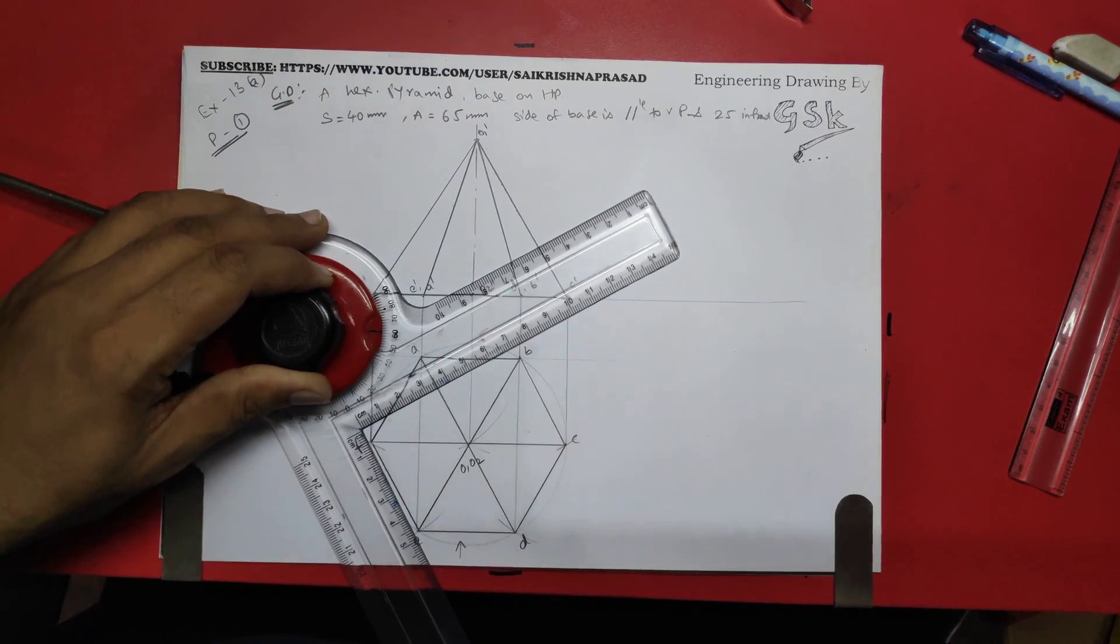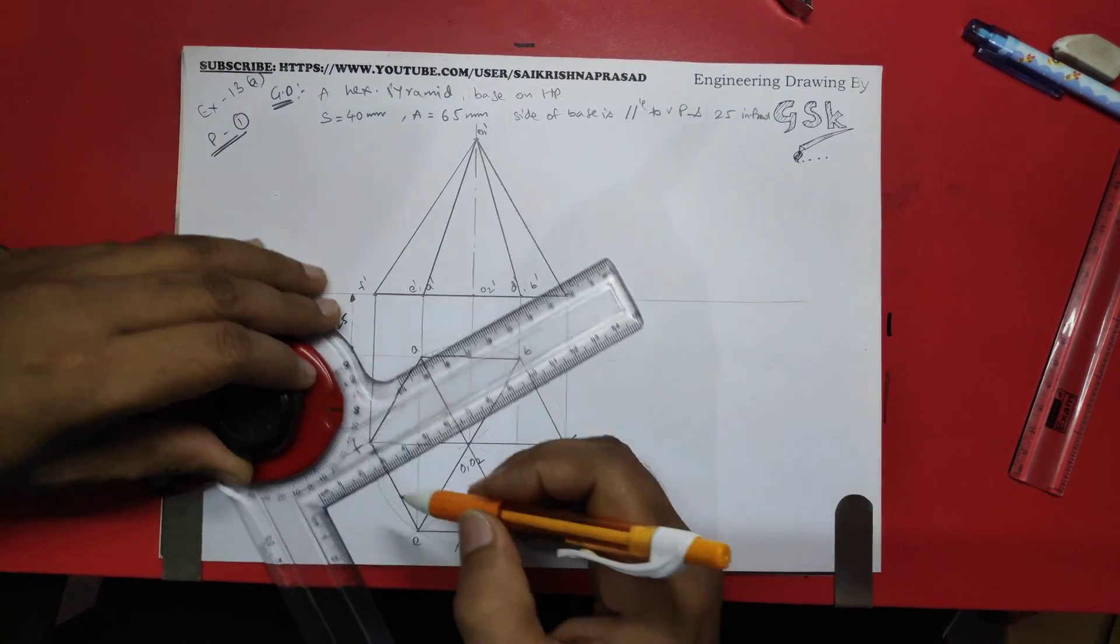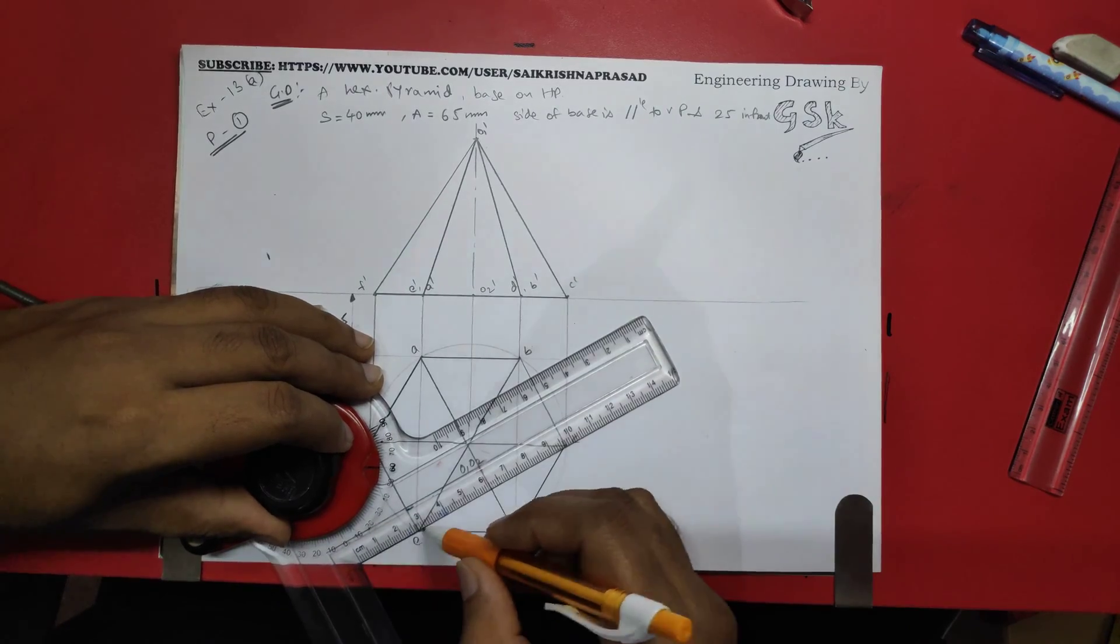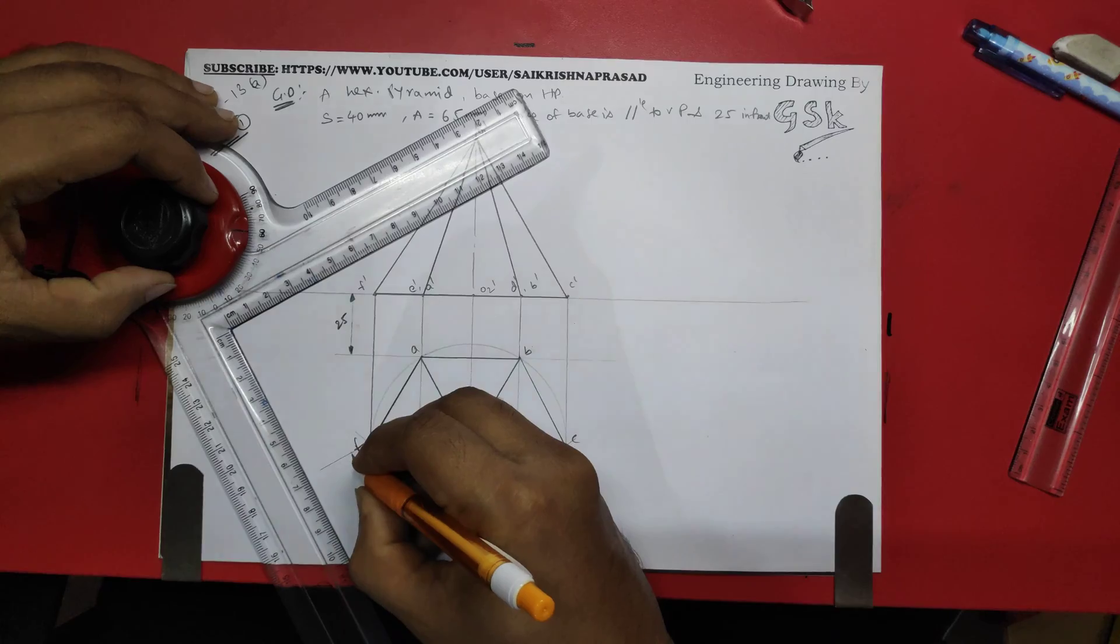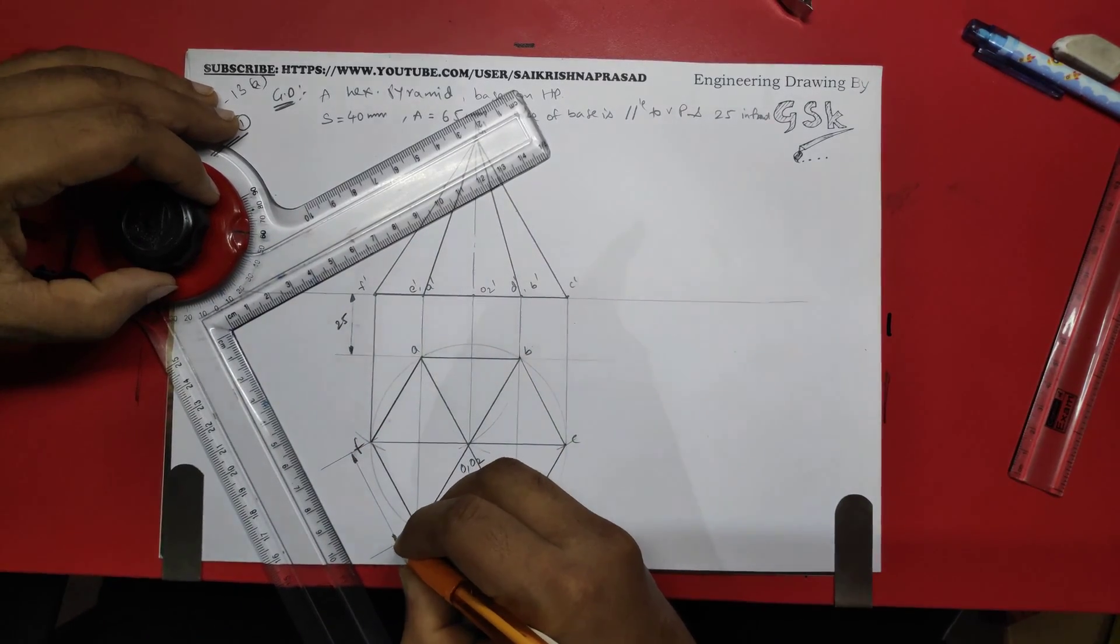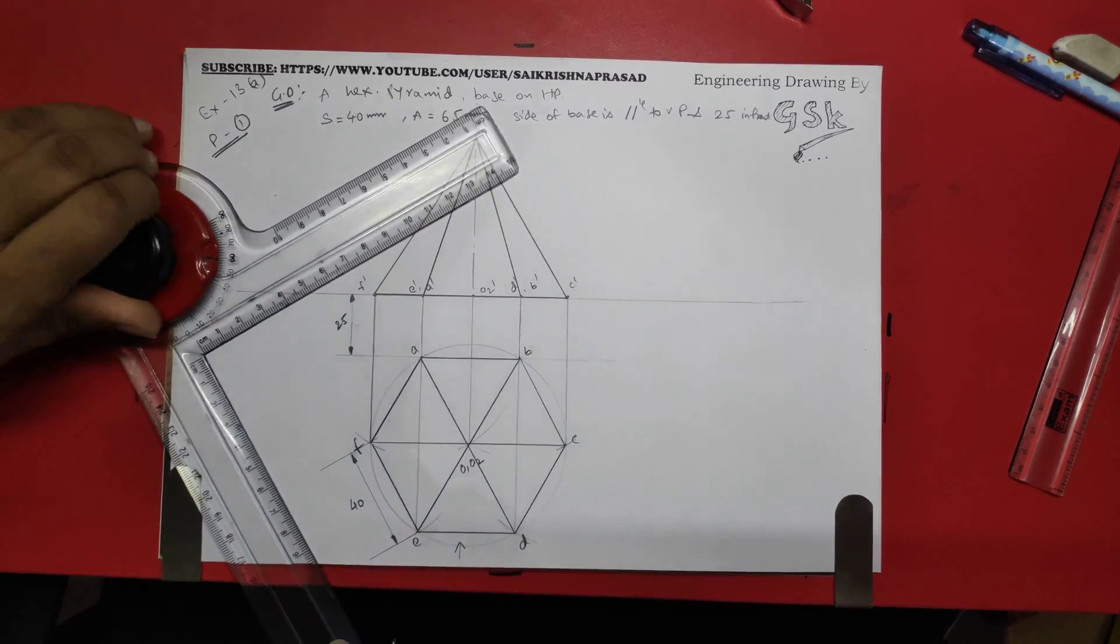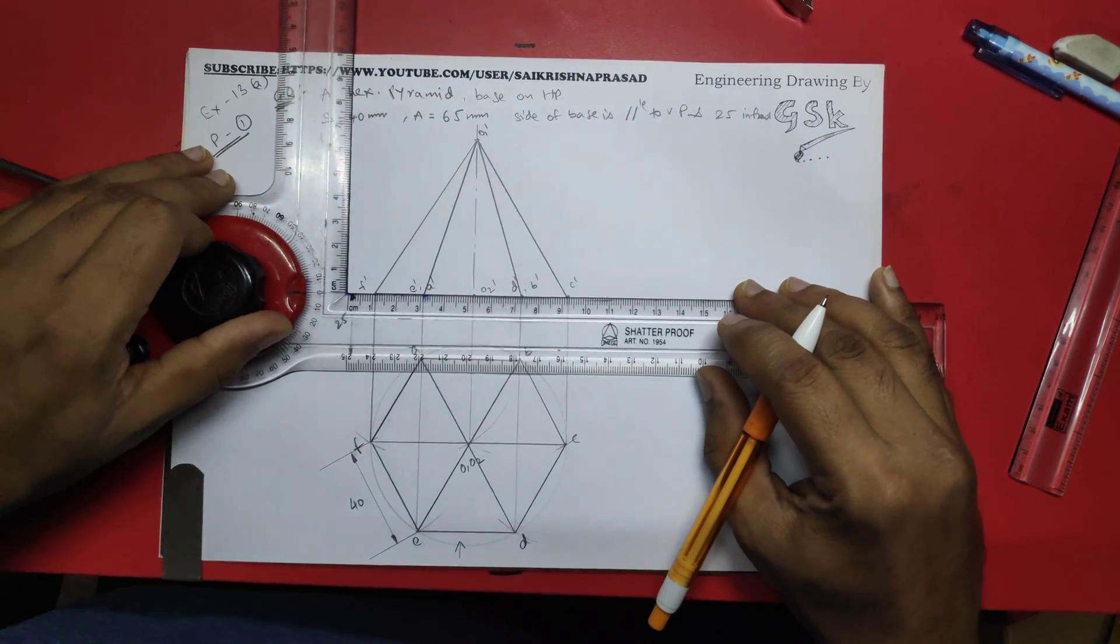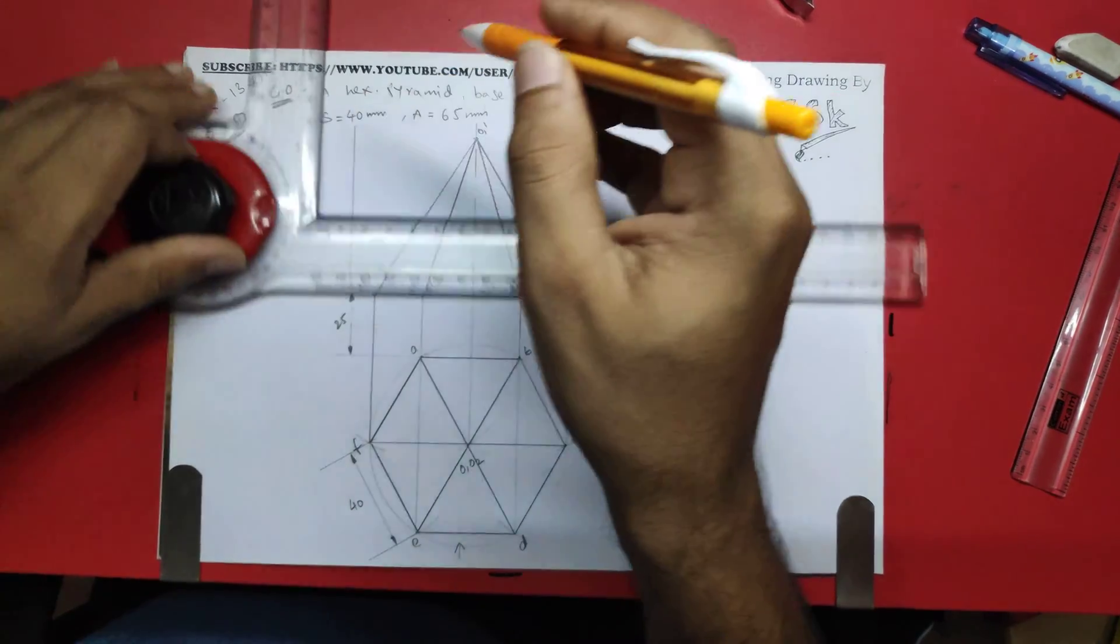The base, and coming to the dimensional representation, I'll be representing the dimension of the side over here. The side of this hexagon is 40 and the height of the pyramid is 65.